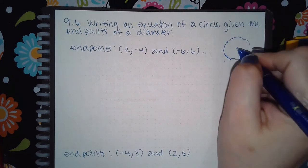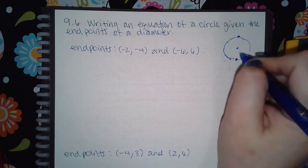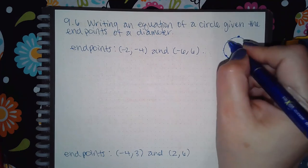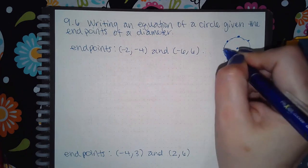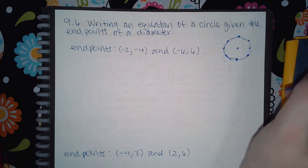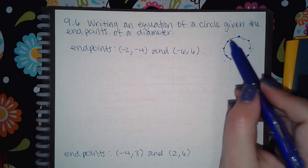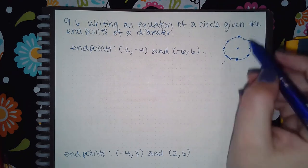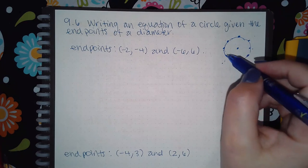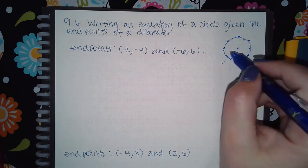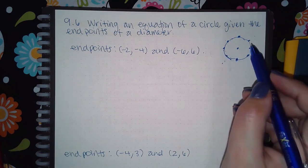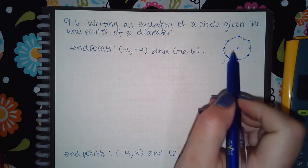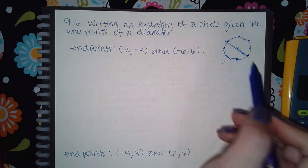The two points will be right across from each other on the diameter — they could be here, or here, or over here, right across from each other. The points are going to be across from one another so that they can create that diameter. In this case, with negative two and negative six, I'm thinking of a situation kind of like this on the graph.